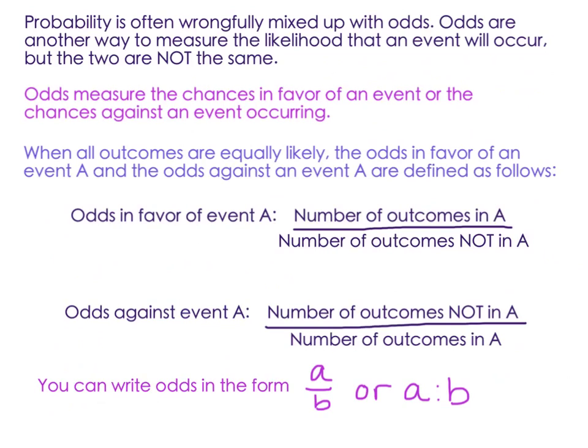Now this is important. Probability is often wrongfully mixed up with odds, right? You say, what are the chances of that happening? What is the probability of that happening? What are the odds of that happening? But they don't mean the same thing. Probability is your part out of whole, but odds are your chances for to your chances against. So it's not out of the whole. It's to the opposite amount.